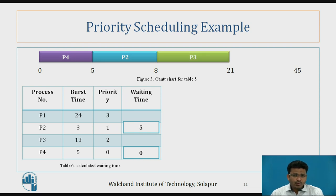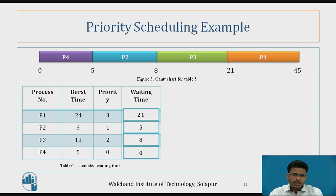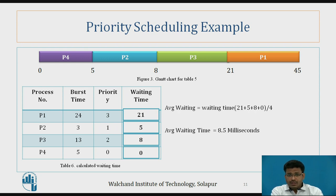Next P3 executes starting at 8 milliseconds, and then P1 has a waiting time of 21. The average waiting time is the sum of all waiting times divided by the total number of processes: (21 + 5 + 8 + 0) divided by 4, giving an average waiting time of 8.5 milliseconds. In this way the priority scheduling algorithm works.